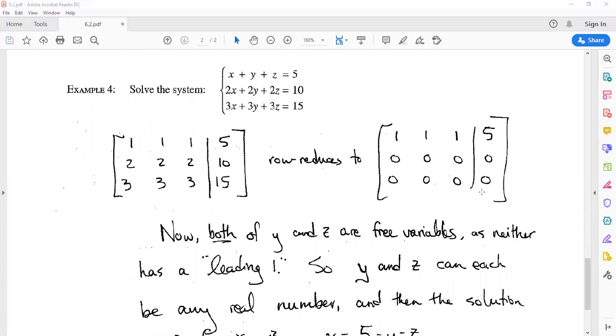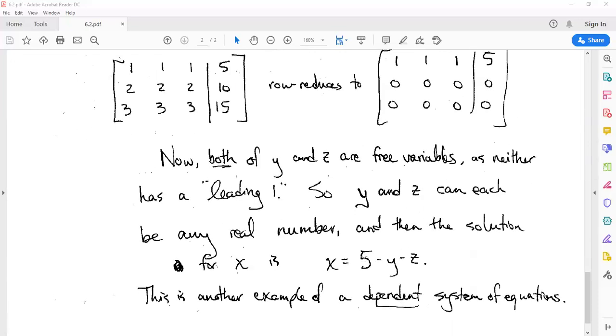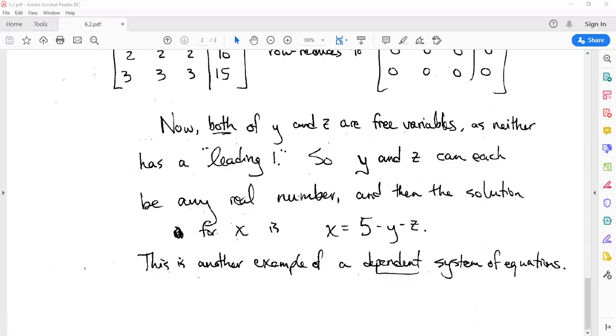And then from there, what we know is that x plus y plus z must equal 5. In other words, we can then solve for x and write x must equal 5 minus y minus z. So this one is like almost doubly dependent in a sense, and there's really an infinite number of solutions here.